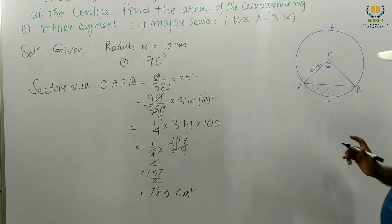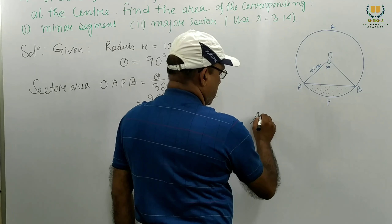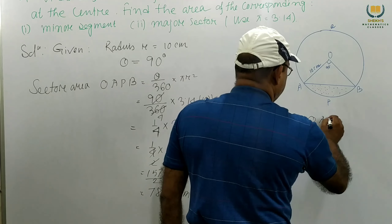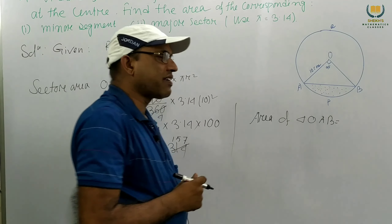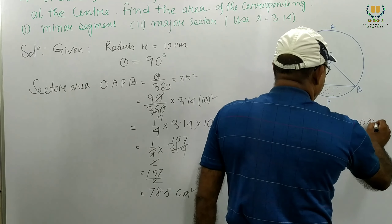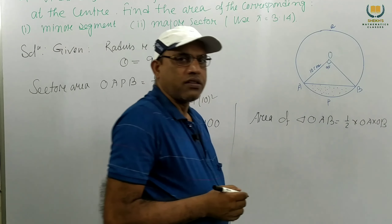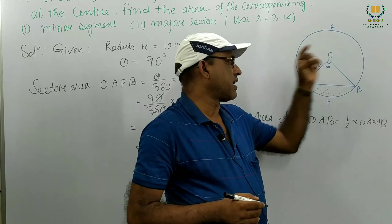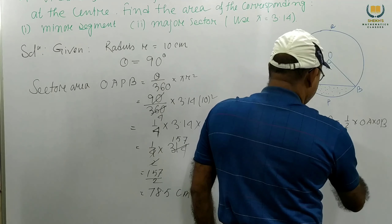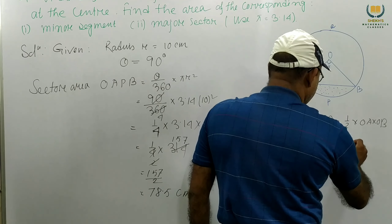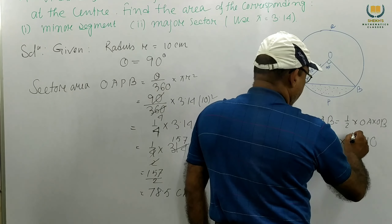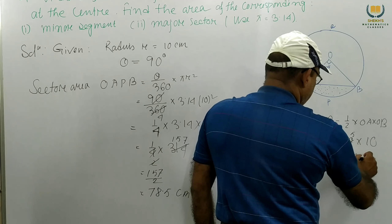Now we want to find the area of triangle OAB. This is a right-angle triangle, so the area is one half into OA into OB. One is the height and the other is the base. So half into 10 into 10 equals 50 centimeters square.